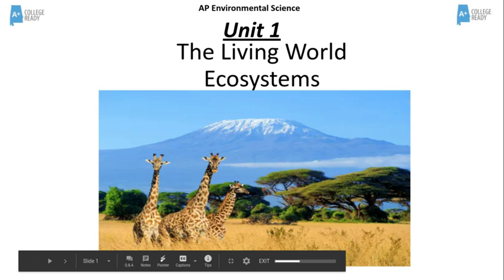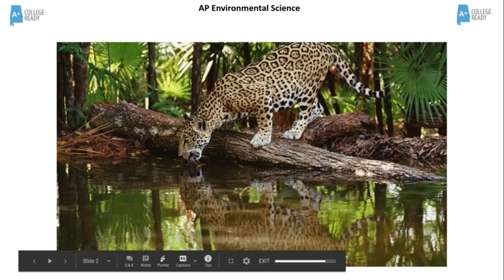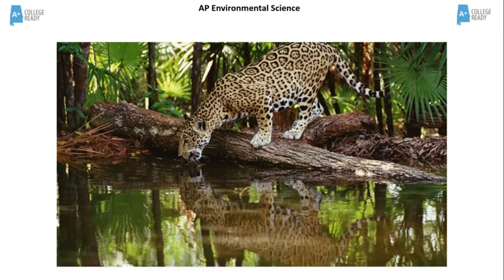This is Unit 1, the Living World Ecosystems. Let's begin by looking at some pictures. Which organisms do you see in each picture? How are the locations alike and different? How are the organisms found in each of these locations alike and different?